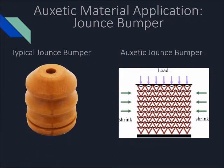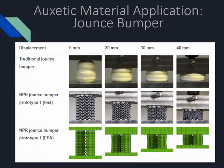An engineering application of an auxetic structure is a car jounce bumper. Pictured on the left is a traditional jounce bumper, and on the right is a negative Poisson ratio jounce bumper. According to a ScienceDirect.com study from 2016, these have excellent viscoelasticity characteristics to absorb impact energy. Compared with traditional jounce bumpers, this auxetic design can achieve similar mechanical behavior, but with a smoother load displacement and greater shock absorption.